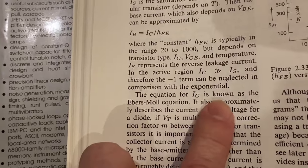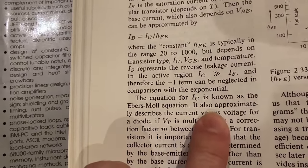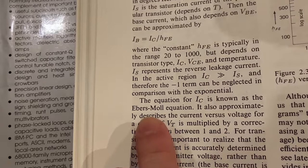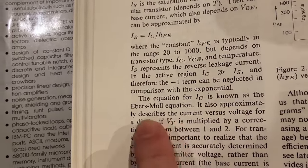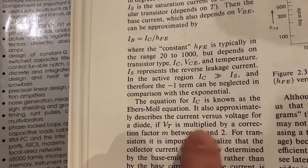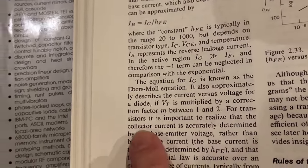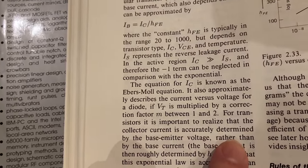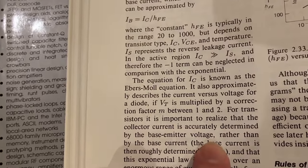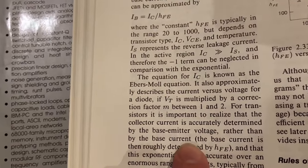The equation for IC is known as the Ebers-Moll equation. It also approximately describes the current versus voltage for a diode. For transistors, it is important to realize that the collector current is accurately determined by the base emitter voltage, rather than the base current.